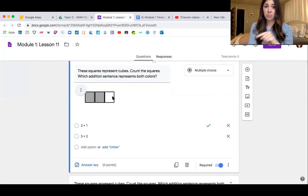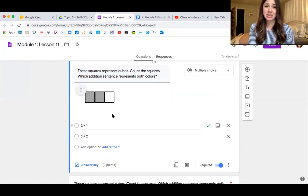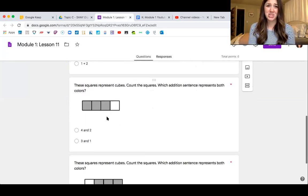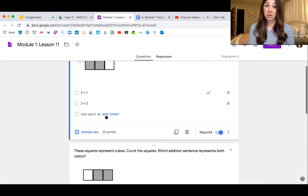Count the squares, and then I want you to find out which number sentence represents both colors. So we have two gray, one white. Which sentence down below matches that? Then down here, same thing. Which sentence matches it? And there's four of those.